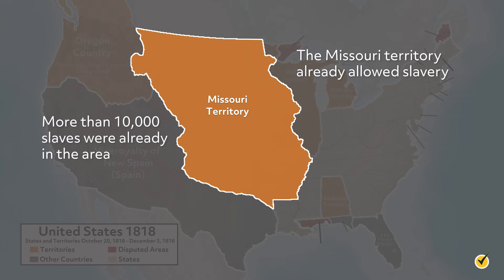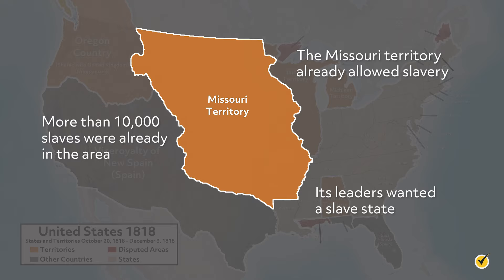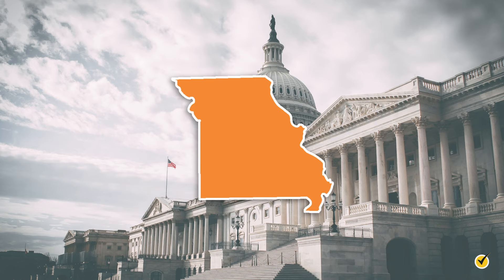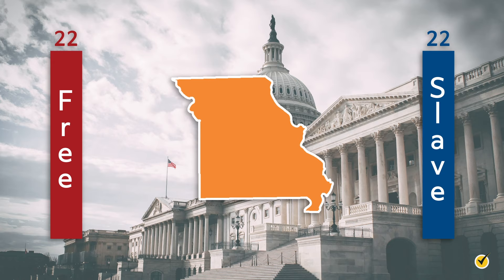Missouri had been the second state out of the Louisiana Purchase territory to apply for statehood, which it did in 1818. The catch was that the Missouri Territory already allowed slavery — more than 10,000 slaves were already in the area, and its leaders wanted a slave state, which immediately set them in conflict with many northern political figures. The situation was on a knife edge. At the time of Missouri's application for statehood, there were 22 senators from free states and 22 senators from slave states. However, a sort of escape valve emerged, potentially offering a solution to the brewing tension.